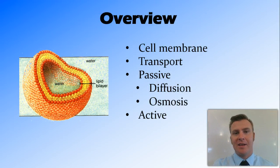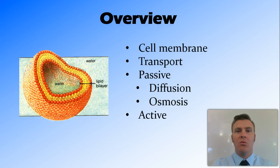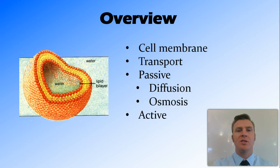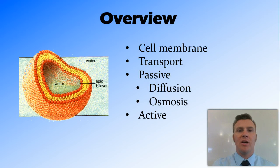In this video we've looked at the cell membrane, being a phospholipid bilayer that is selectively permeable. We've looked at the different types of transport: passive transport, not requiring energy, and active transport, requiring ATP. We've looked at diffusion, which is movement of solute particles from high concentration to low concentration of solute. And we've looked at osmosis, which is the movement of solvent particles from a high concentration of solvent to a low concentration of solvent. Finally, active transport uses energy because it's moving molecules against the concentration gradient.